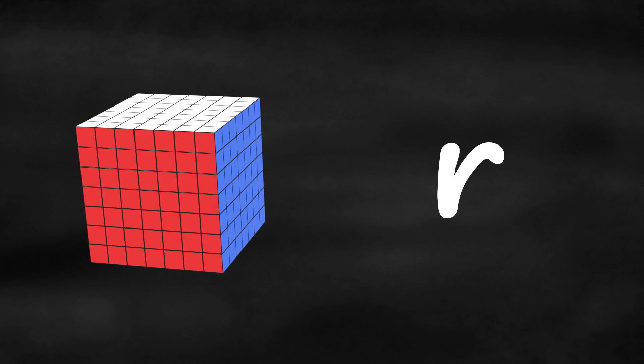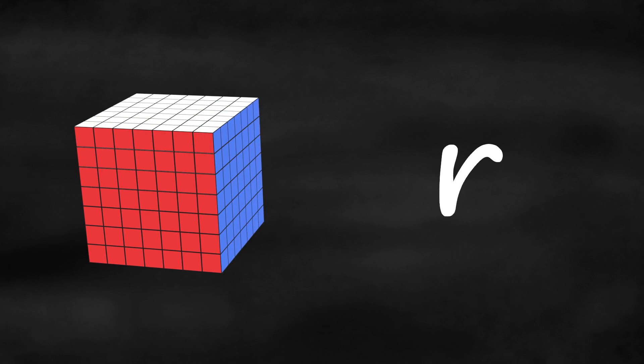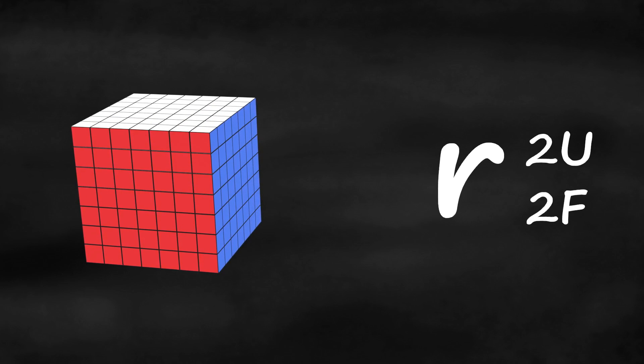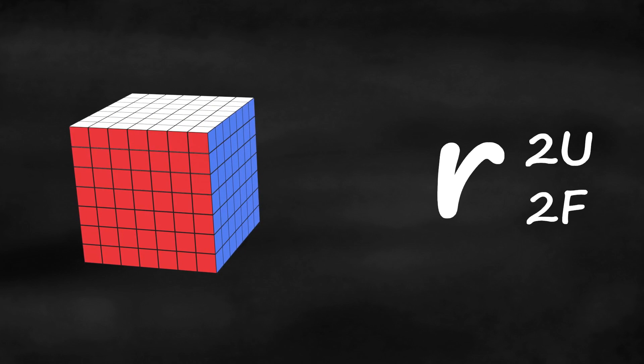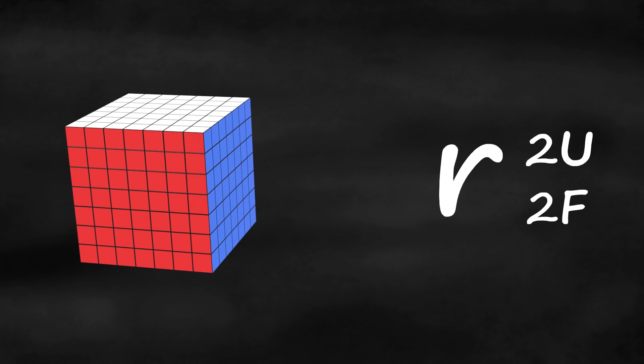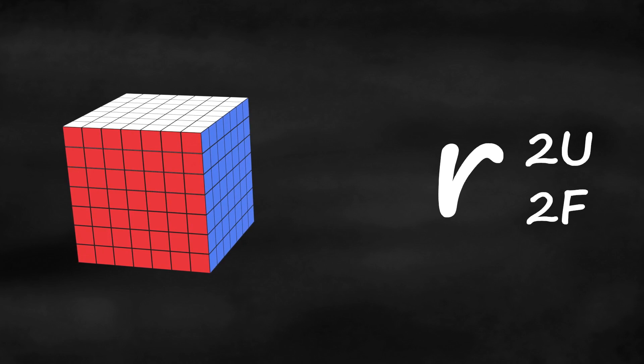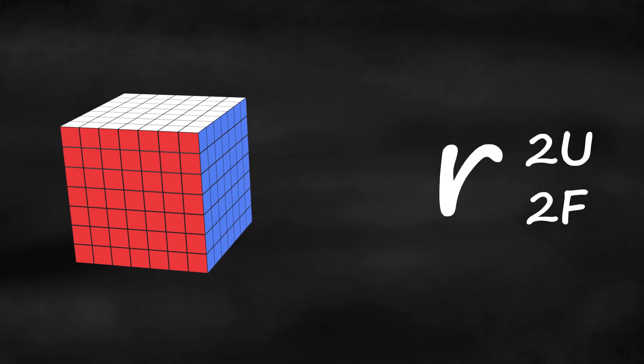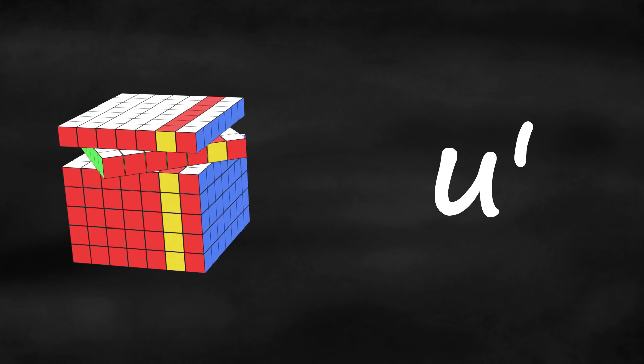If you see a lowercase letter, it actually doesn't mean turn two layers like on a 3x3. It means the same thing as 2u or 2f, meaning turn the inner layer and just the inner layer. I'm not sure why we don't just use normal notation, but just know that a lowercase letter means the same thing as a big letter with a 2 at the beginning. Little r, little u prime.